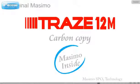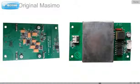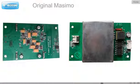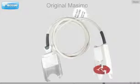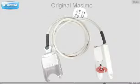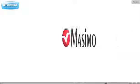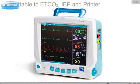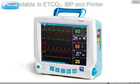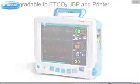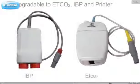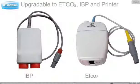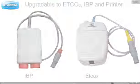Trace 12M is a 5-parameter patient monitor with an original Masimo module at an affordable price. The Masimo module is imported and is a world leader in pulse oximetry technology. The probes are original Masimo. The Trace 12N and Trace 12M can also be upgraded for ETCO2, 2-channel IBP, and printer.